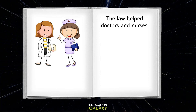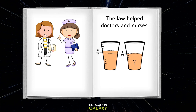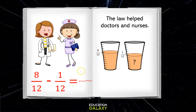The law helped doctors and nurses. The patient took one-twelfth of a tablespoon of medicine, but his dose was eight-twelfths of a tablespoon. How much more medicine should I give him? Well, we need to subtract: eight-twelfths minus one-twelfth. The law says that if we are subtracting, we have to have common denominators, which we do — both fractions have a denominator of twelve. To subtract, we just subtract the numerators and keep the denominators the same. Since eight minus one equals seven, we get seven-twelfths.